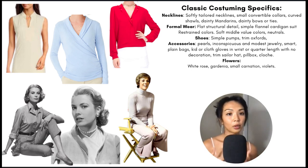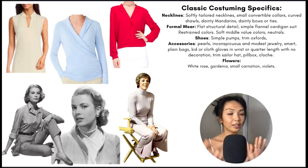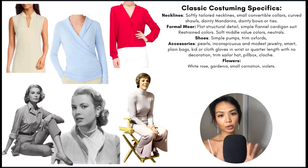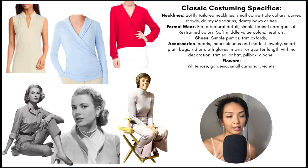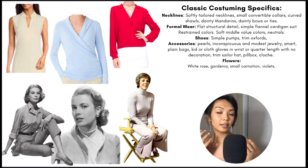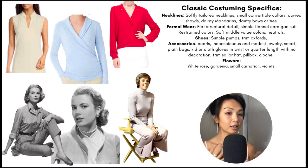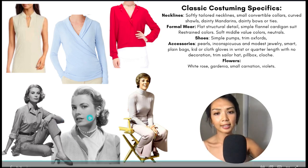Accessories include pearls, inconspicuous modest jewelry, smart plain bags, kid or cloth gloves, and wrist or quarter-length gloves with no decoration — again, very understated. Trim sailor hats, pillbox hats, and cloche hats are also mentioned. Flowers associated with the Classic include white rose, gardenia, small carnations, and violets — very elegant, sophisticated, understated kinds of flowers and details.